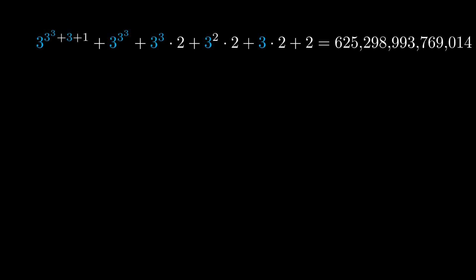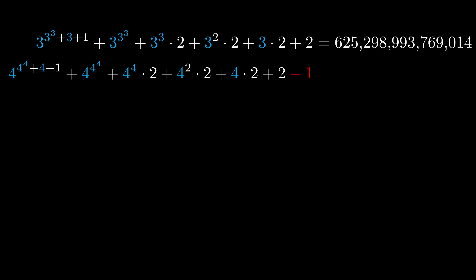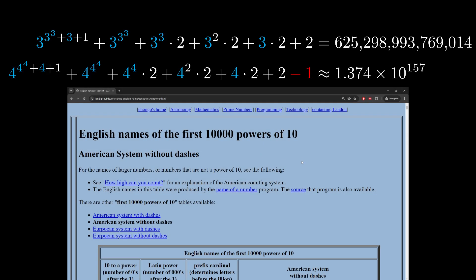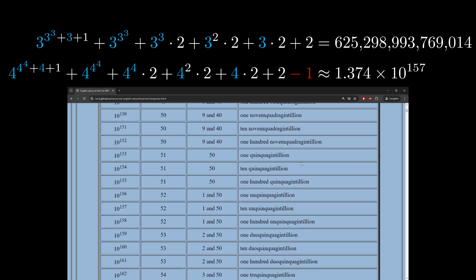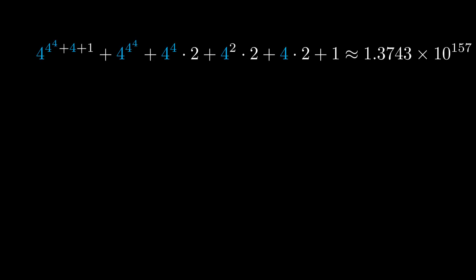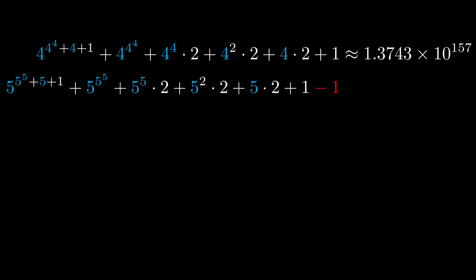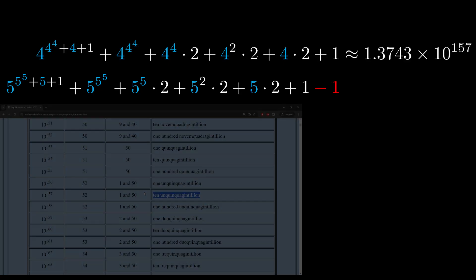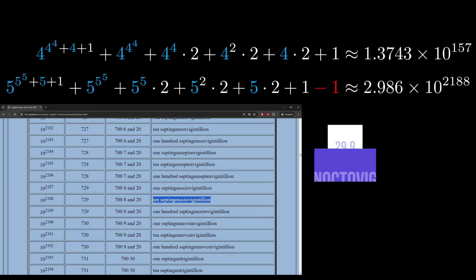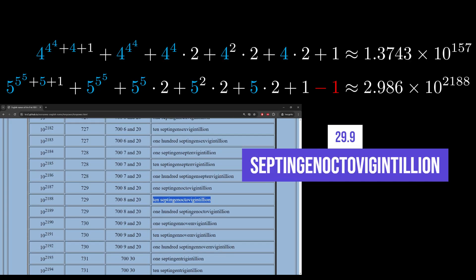Now let's do it again. Let's take our 625 trillion and write it in pure base 3. If we replace all the 3s with 4s and then subtract 1 again, we get about 13.7 unquinquigentillion. If we do this one more time — write in pure base 4, replace all the 4s with 5s, and subtract 1 — we obtain about 29.9 septagenocdivigentillion. I didn't even know that was a word.